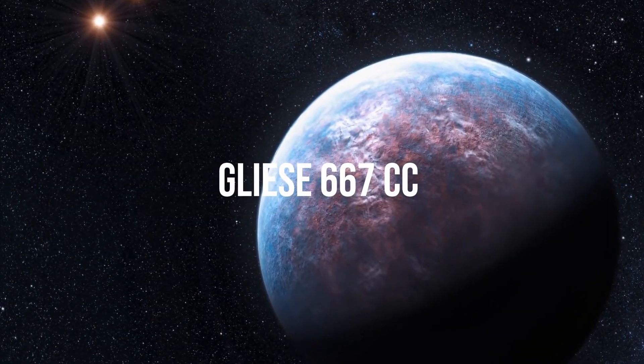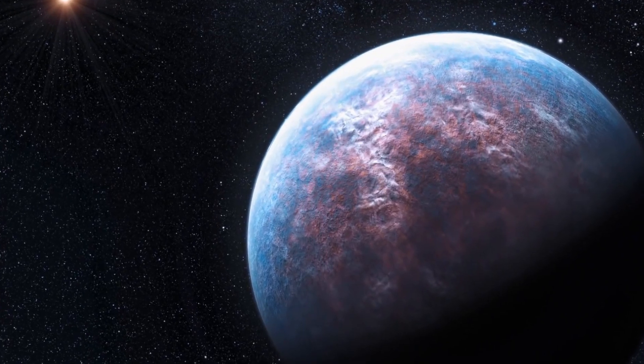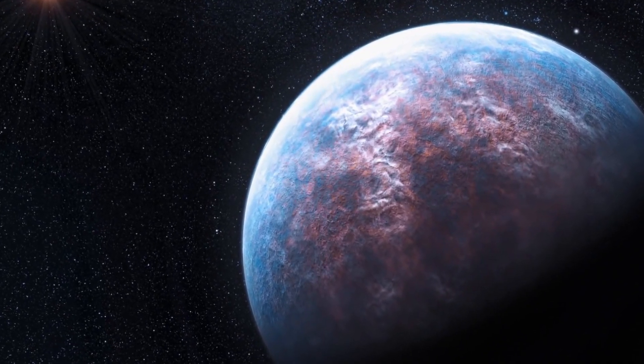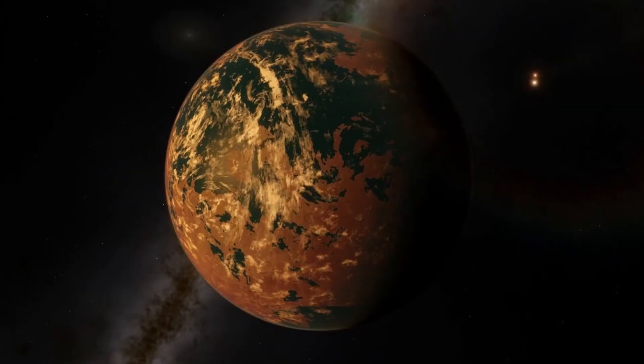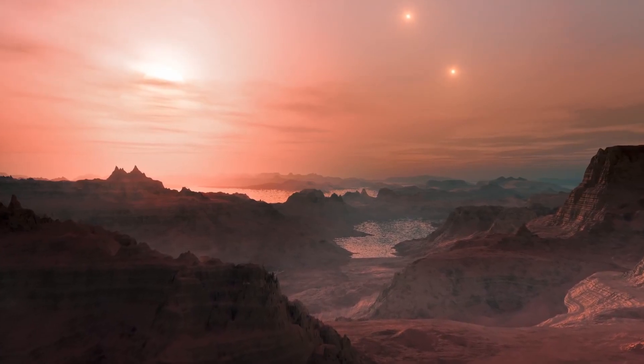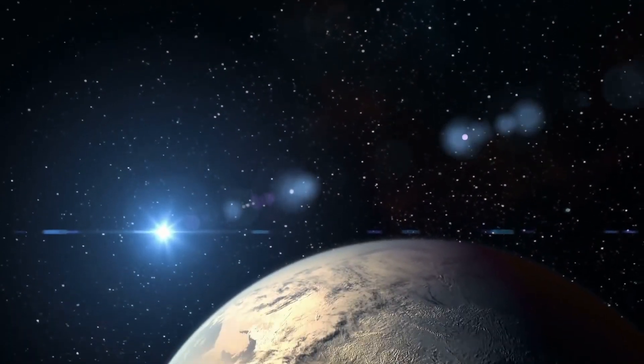Gliese 667c emerges as a compelling candidate potentially superior to Earth in fostering life due to its strategic placement within its star's habitable zone. Orbiting its parent star, Gliese 667c, this super-Earth presents a tantalizing prospect, situated at a distance that suggests the potential existence of liquid water, a fundamental ingredient for life as we understand it.